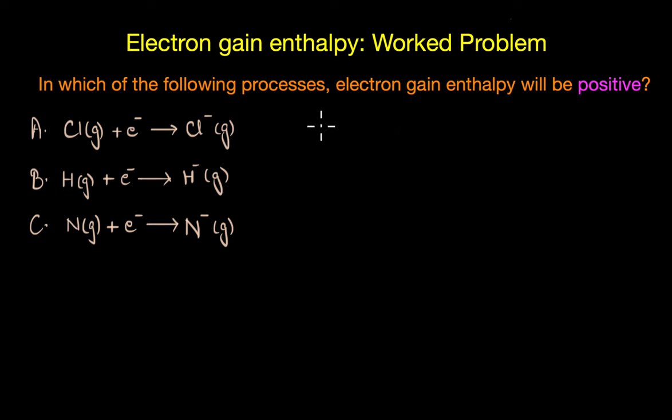Now chlorine has an outer electronic configuration of 3s2 3p5. It has 7 valence electrons and when we add an electron it attains a highly stable noble gas configuration of argon 3s2 3p6. Now it has a completely filled octet. So here addition of an electron results in a highly stable electronic configuration. So in this case electron gain enthalpy would be negative because energy is released in this process. In fact the first electron gain enthalpy of chlorine is about minus 349 kJ per mol.